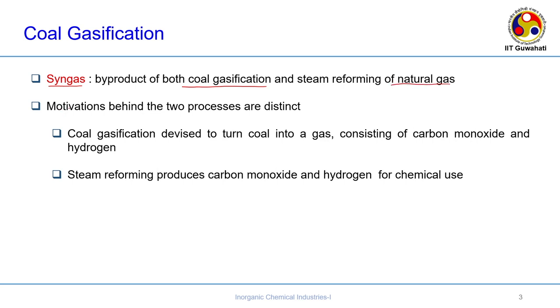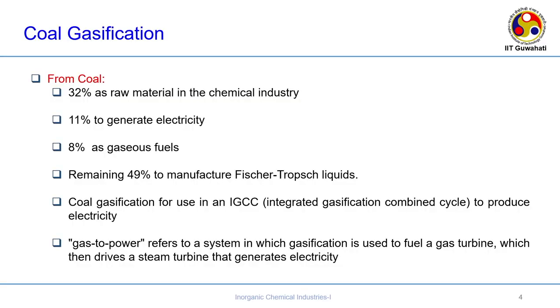The motivations behind the two processes are distinct. In coal gasification, the aim is to turn coal into a gas - this gas may be carbon monoxide, hydrogen, methane, ethylene, or some intermediate, primarily consisting of carbon monoxide and hydrogen - while steam reforming produces carbon monoxide and hydrogen only for chemical use. Steam reforming is not used for power generation. Coal gasification can also be used for power generation because you generate a hot gaseous mixture that can drive a gas turbine, generating electricity. So you can produce chemicals and generate electricity - a two-fold motive.